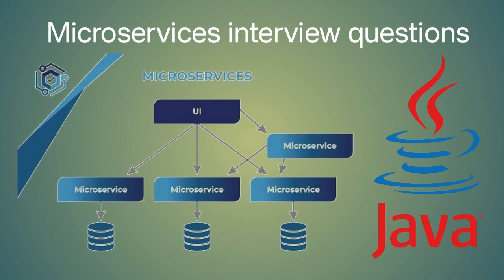How do you monitor and manage microservices in production environments? To monitor and manage microservices in production, you can use tools like Prometheus and Grafana to monitor metrics and performance, logging tools like ELK Stack or Fluentd to manage logs, and container orchestration platforms like Kubernetes to manage and scale the microservices.